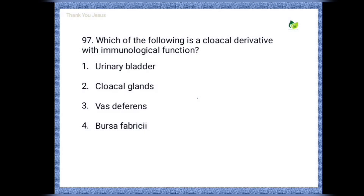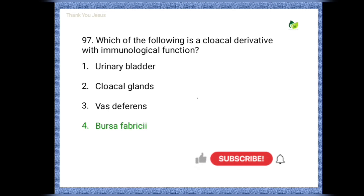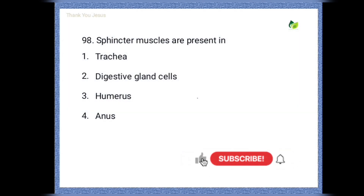Next question: which of the following is a cloacal derivative with immunological function? Options are: urinary bladder, cloacal glands, vas deferens, bursa of Fabricius. The correct option is bursa of Fabricius.